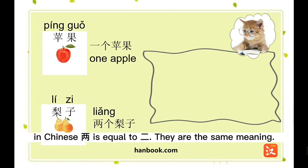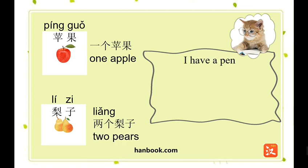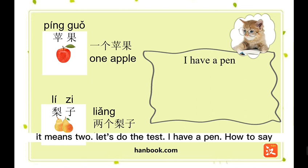两个梨子。 In Chinese, 两 is equal to 二 — they have the same meaning. It means two.